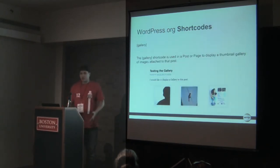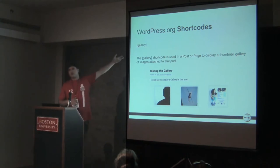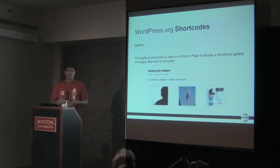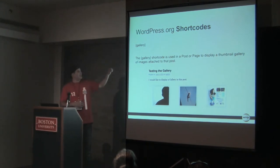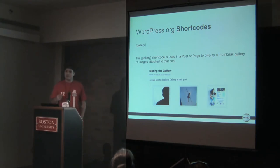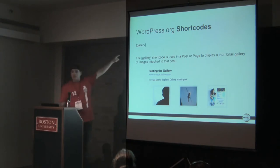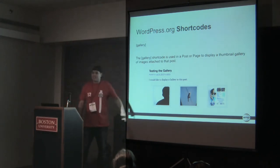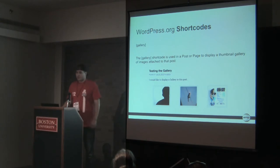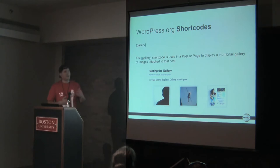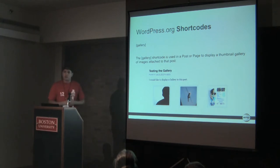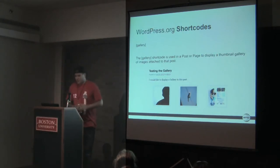WordPress.org shortcodes: this is one of the more well-known shortcodes that you have access to on your self-hosted WordPress site. If you attach a bunch of images by uploading them within a post, that image gets attached to that post. If you drop the gallery shortcode in there, it automatically formats it into a gallery layout. It's an easy way to create a nice little gallery within your content without having to install an additional plugin. Unfortunately, this is one of the only really valuable shortcodes you get out of the box.